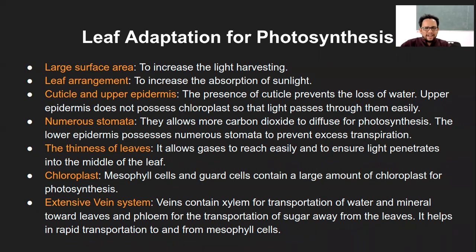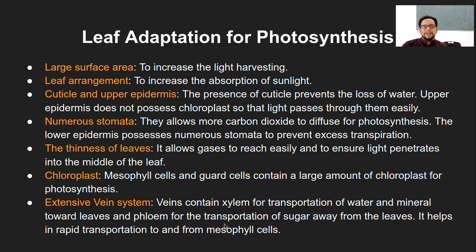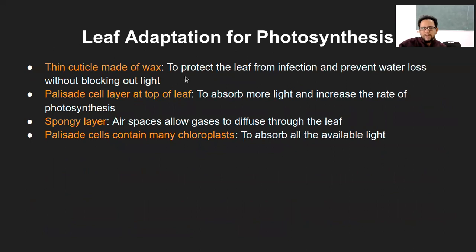The vein system helps in transportation to and from the mesophyll cells of the leaf. The xylem and phloem tissues help in conduction of water with minerals and glucose across the plant. If veins were not present in the leaf structure, the food would accumulate there and not be transported to other parts. So this transport system through xylem and phloem tissue is a very important process.